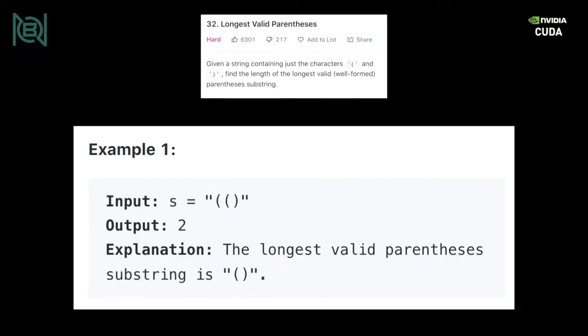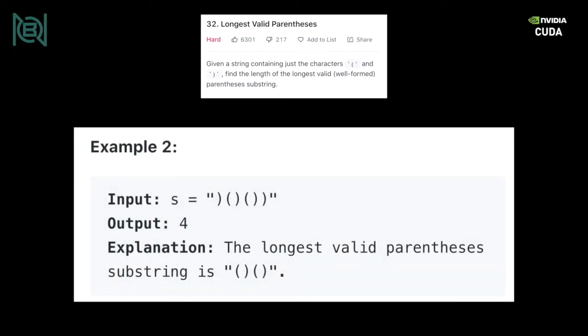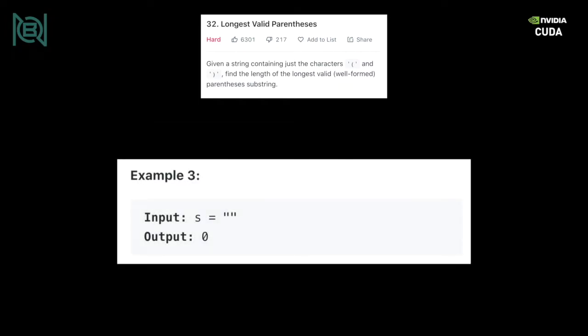For the string open paren, open paren, close paren, our expected length would be two. Of course for close, open, close, open, close, close, the expected answer is four. And for the empty string the answer is zero.